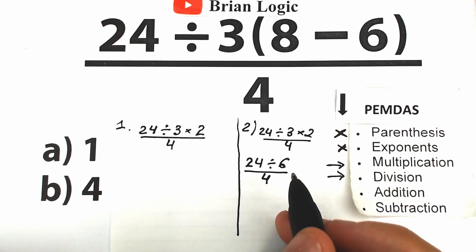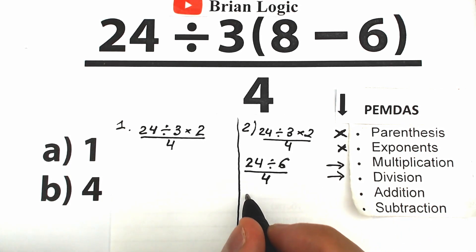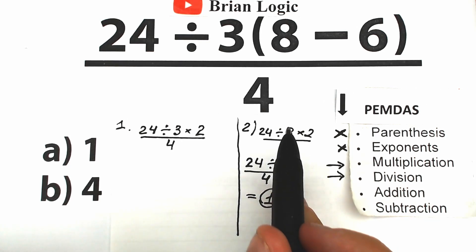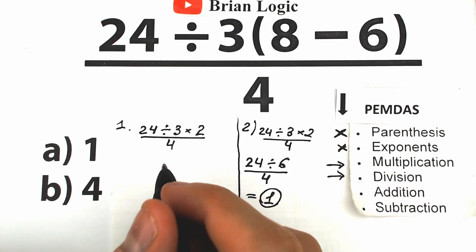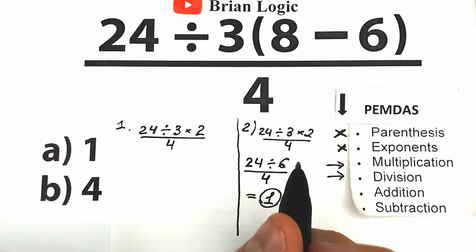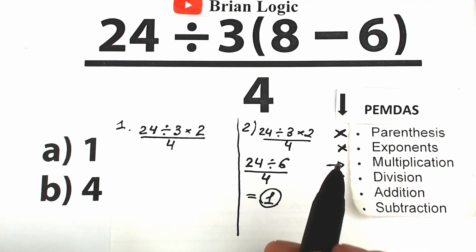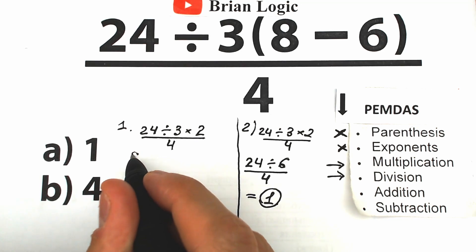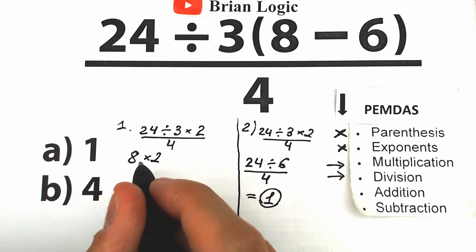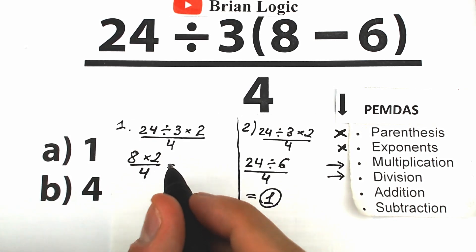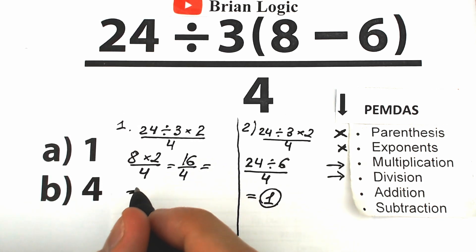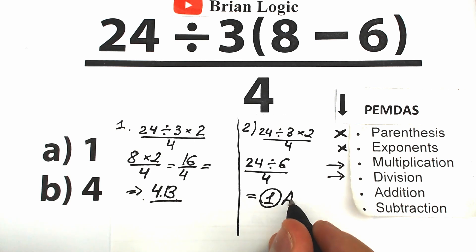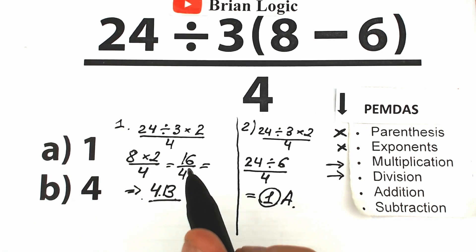In that second interpretation: 24 divided by 6 equals 4, and 4 divided by 4 equals 1. So that interpretation gives answer 1. But in the first interpretation, using PEMDAS strictly left to right, the first sign is 24 divided by 3, which equals 8. Then 8 times 2 equals 16, and 16 divided by 4 equals 4. So the correct answer according to this interpretation is 4 — option B.